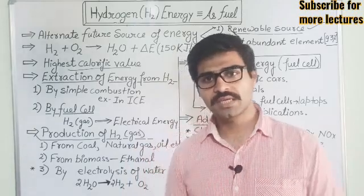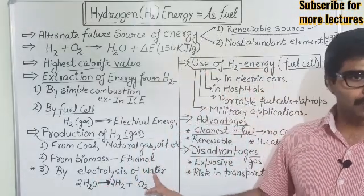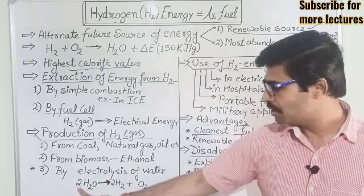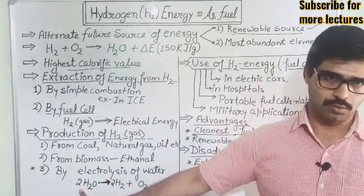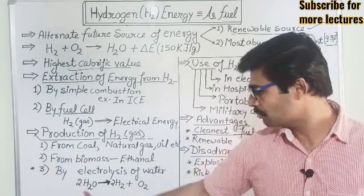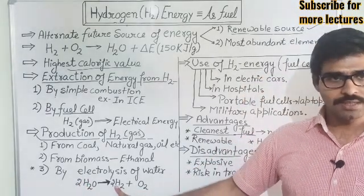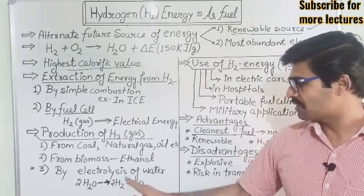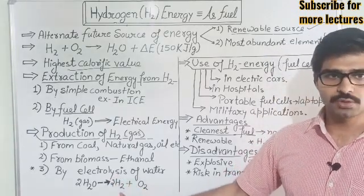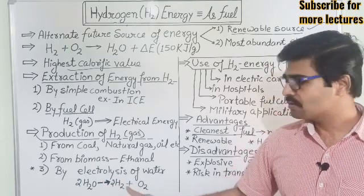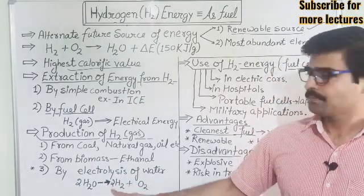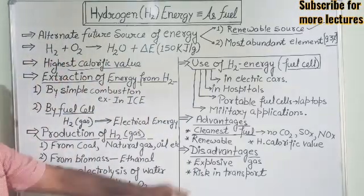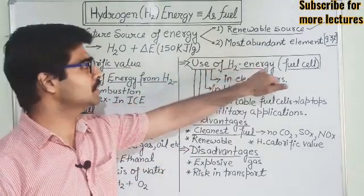The third method, which is commercially acceptable, is the electrolysis of water. This is the commercial method generally used for the production of hydrogen gas. Electrolysis of water means the dissociation of water molecules into hydrogen and oxygen. The hydrogen gas generated after dissociation can then be used as fuel.